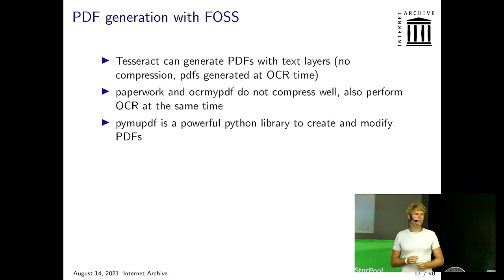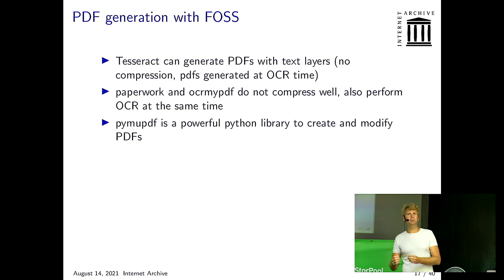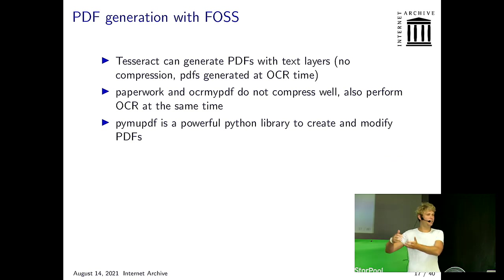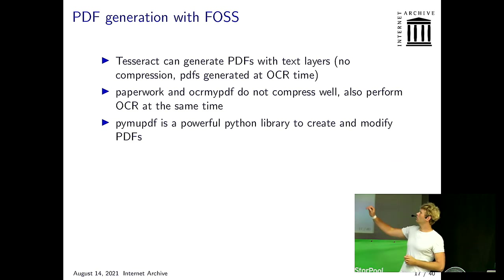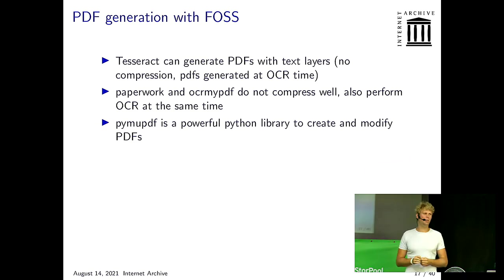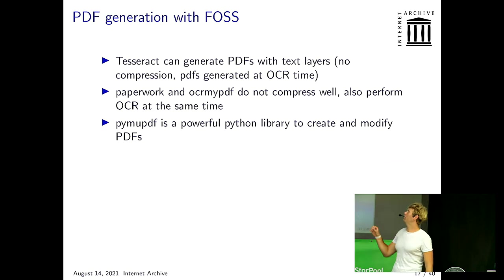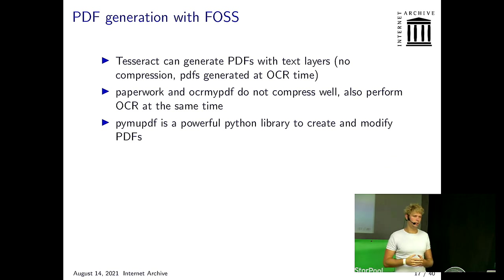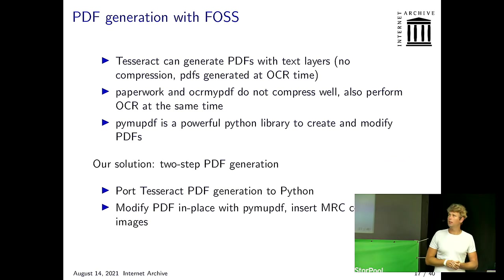The question was: how much can we already do with free and open source software? Tesseract, the OCR engine, can actually make PDFs, but the problem is it does it at the OCR step so there's no separate step, and the PDFs it makes are not compressed at all — so if you have 600 megabytes of photos and you OCR them, you get a 600 megabyte PDF. There's also paperwork and OCR My PDF that people use, but they also don't compress well and do everything at the same time. What I found to be a very useful tool was pymuPDF, a very powerful Python library for the muPDF library, which you can use to read, modify, and display PDFs.